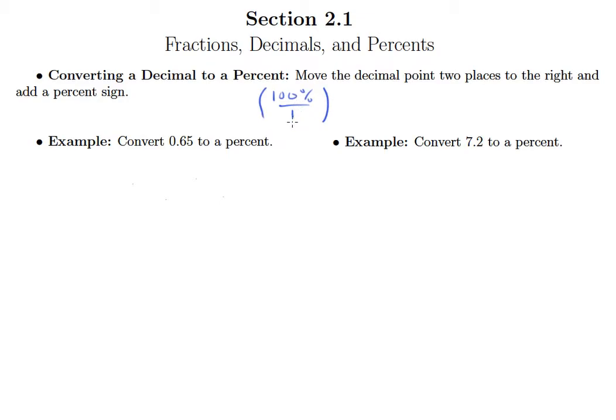What we understand from that is when we're converting these numbers into their percent form, we're just multiplying by 100. But we also know from previous experience that multiplying by 100 simply means moving the decimal point two places to the right. So in actuality, if the number we're trying to convert to a percent is already a decimal, then all we have to do is move the decimal two places to the right.